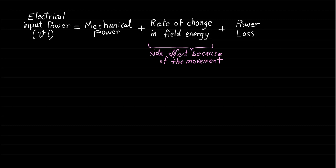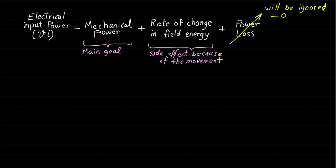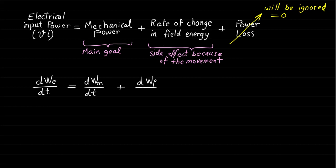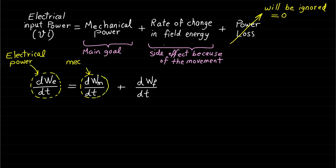The actual goal of the process is to achieve output mechanical power or energy. Since the power loss will be ignored as it does not contribute to the electromechanical energy conversion process, and since the power is changing during the process, this equation can be represented as a change of energy d over dt as follows: dwe/dt represents the rate of change in electrical energy, dwm/dt represents the rate of change in mechanical energy, and dwf/dt represents the rate of change in field energy.